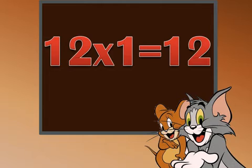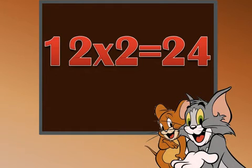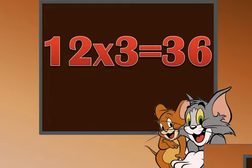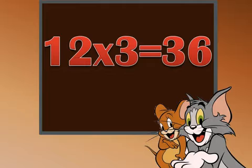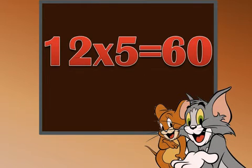12 ones are 12. 12 twos are 24. 12 threes are 36. 12 fours are 48. 12 fives are 60.